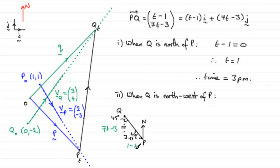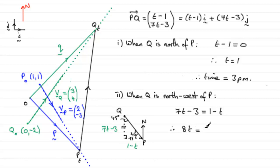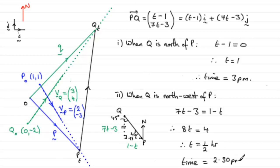We're concerned with the length, so we reverse it. Since both lengths are equal we can say 7t minus 3 must equal 1 minus t. Adding t to both sides gives 8t minus 3, then adding 3 gives 8t equals 4, leading to t equals one half — half an hour. They started at 2 o'clock, so the time is 2:30 p.m.